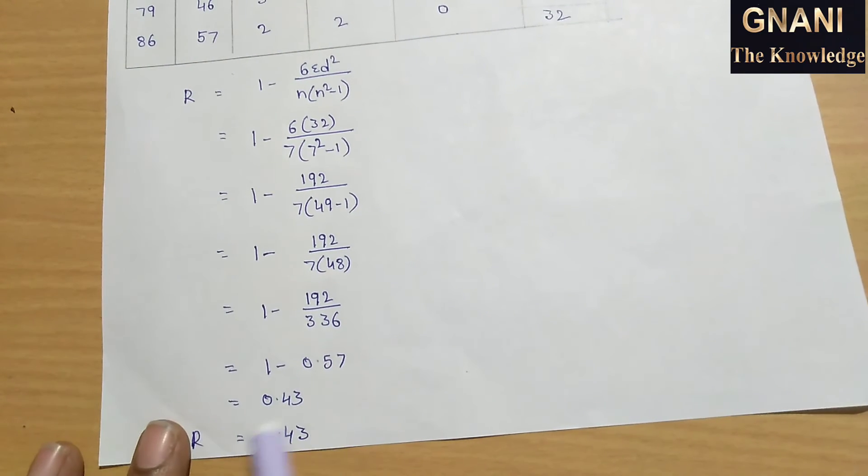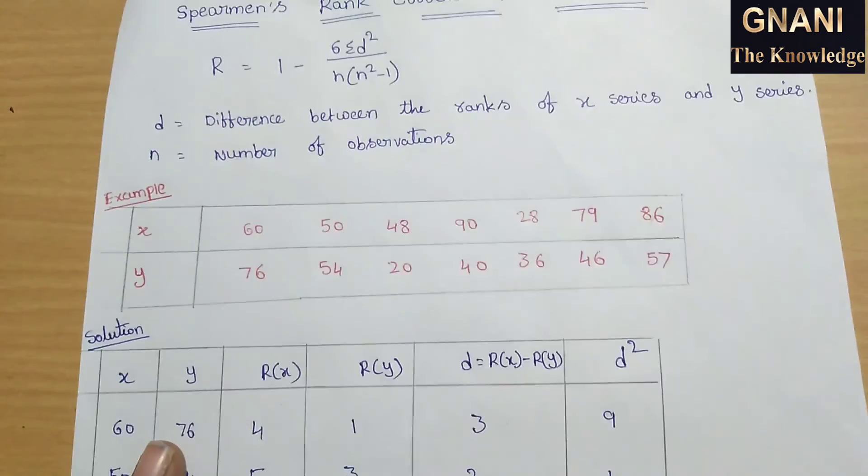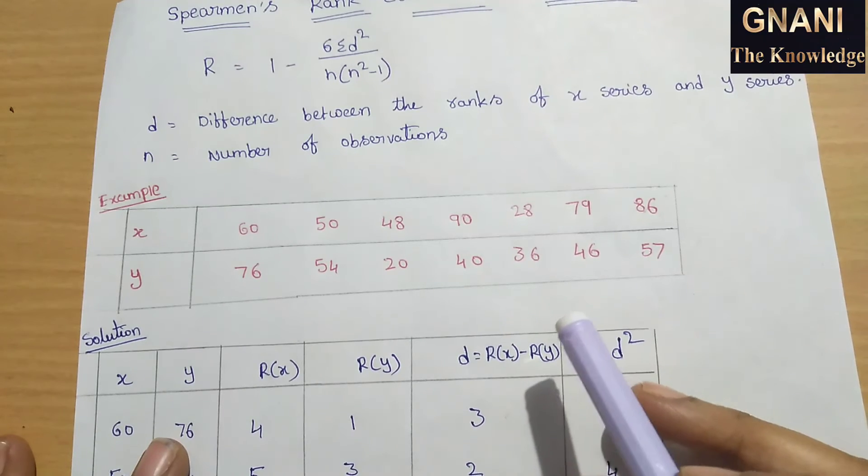This is the Spearman Rank Correlation. This is a very easy method compared to calculating the Carl Pearson Correlation Coefficient.